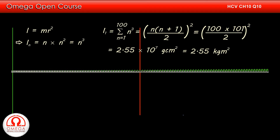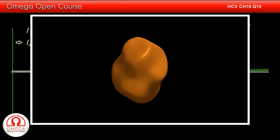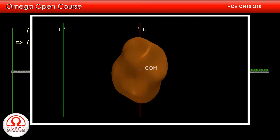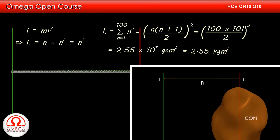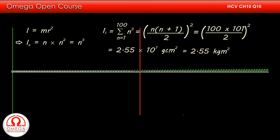But we have to find the moment of inertia about the perpendicular bisector of this scale. We can do that using the parallel axis theorem. As per the parallel axis theorem, if I₀ is the moment of inertia of a system about an axis passing through its center of mass, then its moment of inertia about any axis parallel to this axis and at distance r is given by I₀ + Mr², where M is the mass of the system. So to apply this theorem, we need the moment of inertia about an axis through the center of mass and the distance of the given axis from that axis.